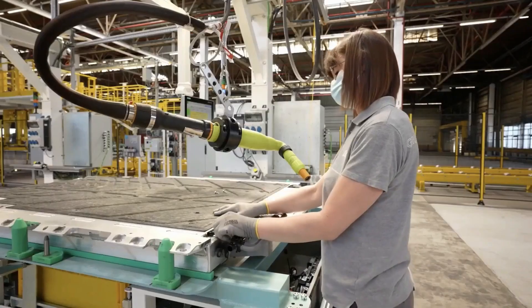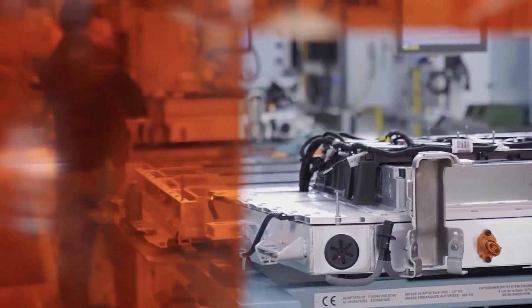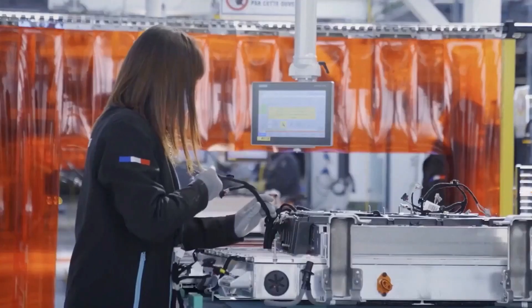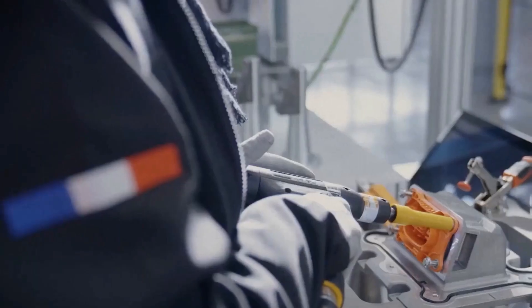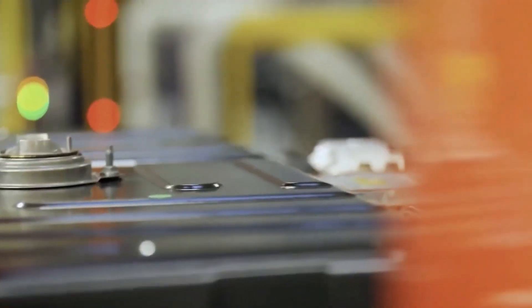Spread over an area of 2.5 square kilometers, the site has produced more than 10 million vehicles since it went into service in 1970. Its 2,305 employees and hundreds of robots are busy today around Scenic, Espace and Talisman, as well as Megane E-Tech.